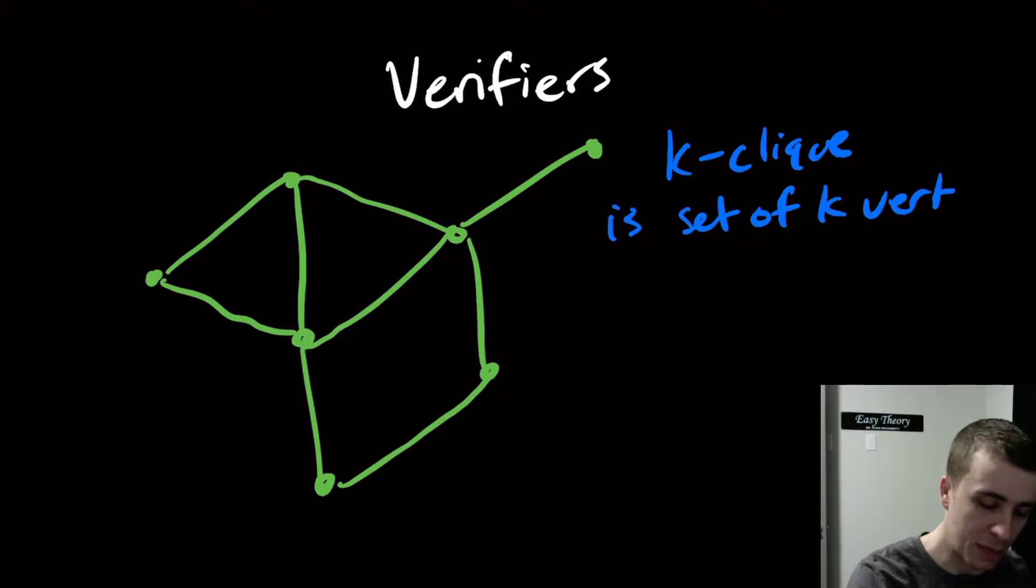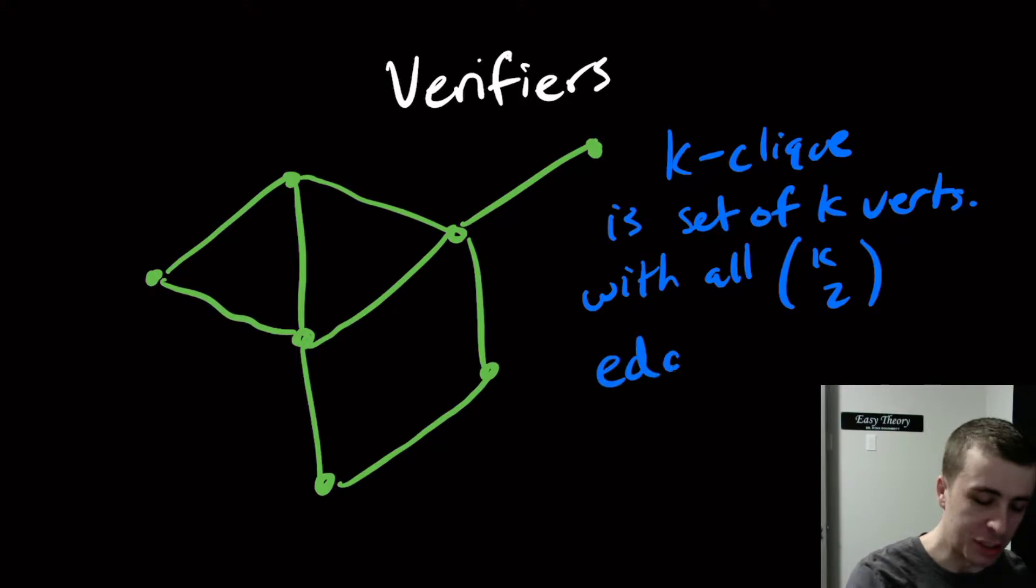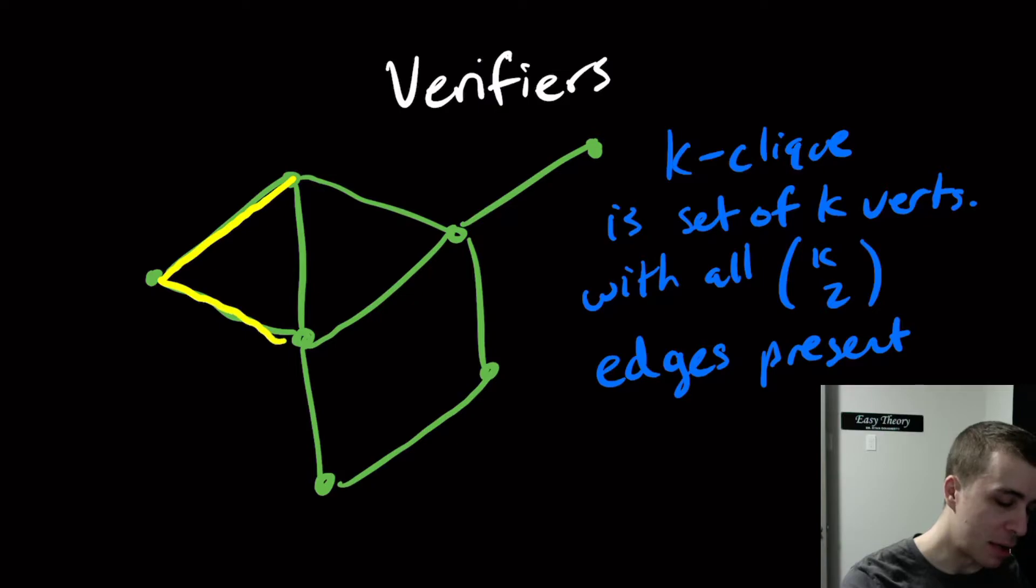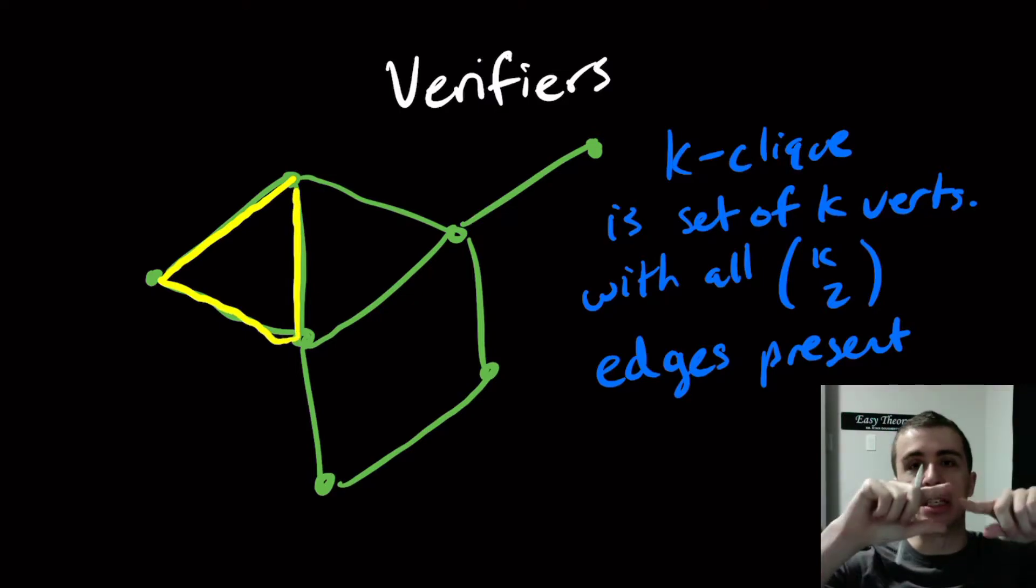with all k choose 2 edges present among them. So the question is, if we have a graph like this one here, what kinds of cliques does it have? You can pretty easily see that there is a three clique right here, essentially a triangle, because we have three vertices and all three edges are present between them.